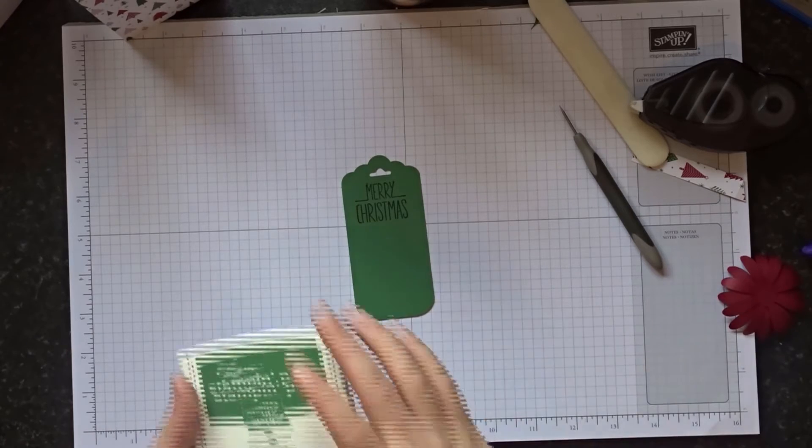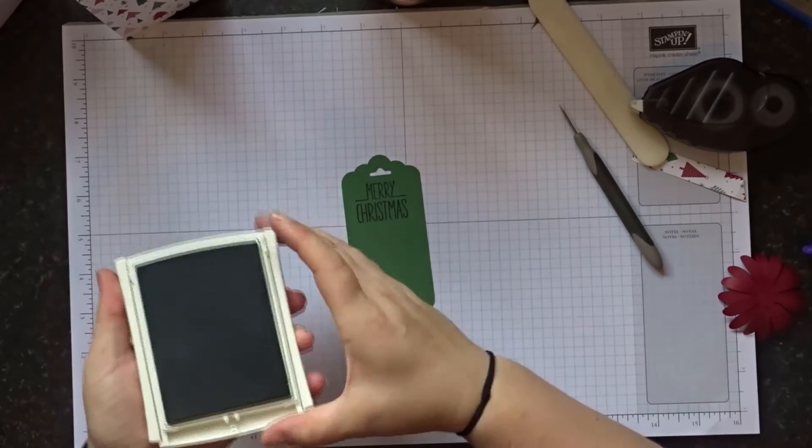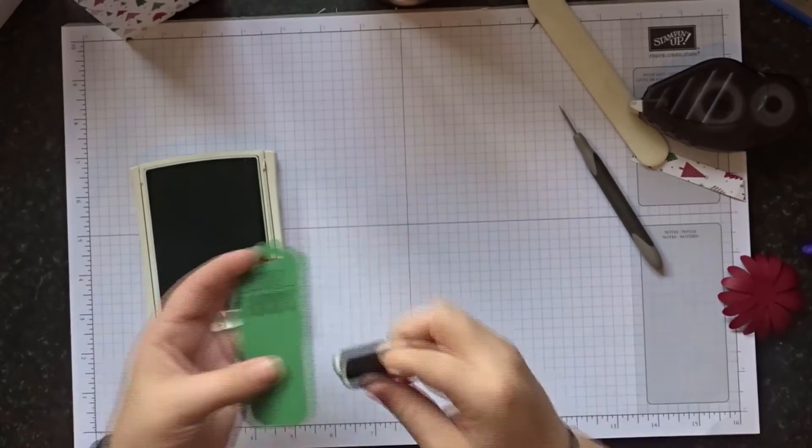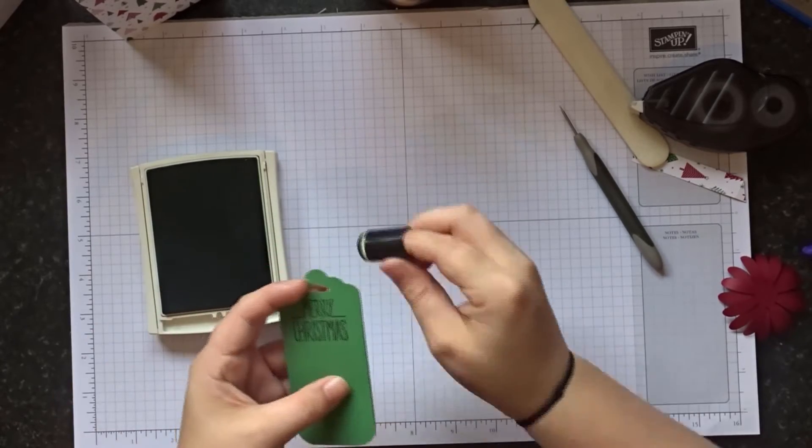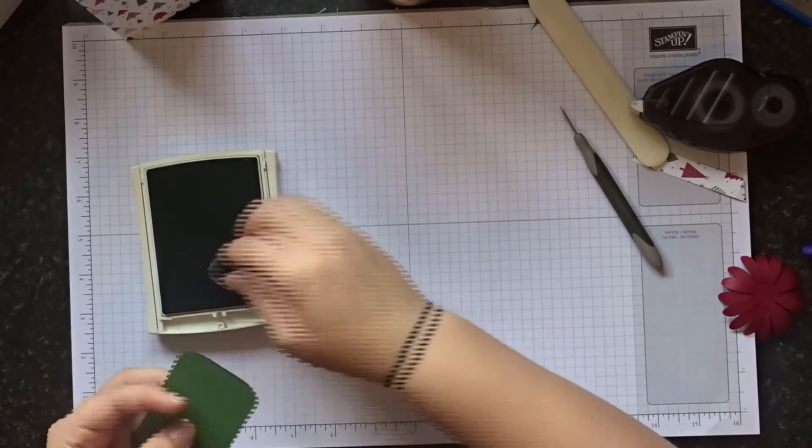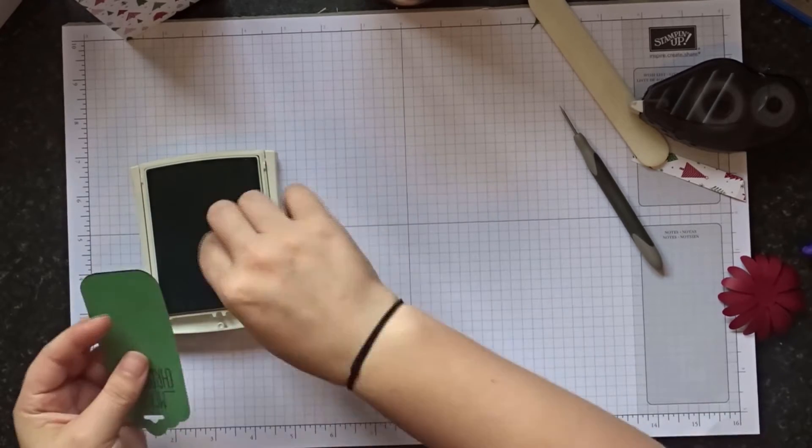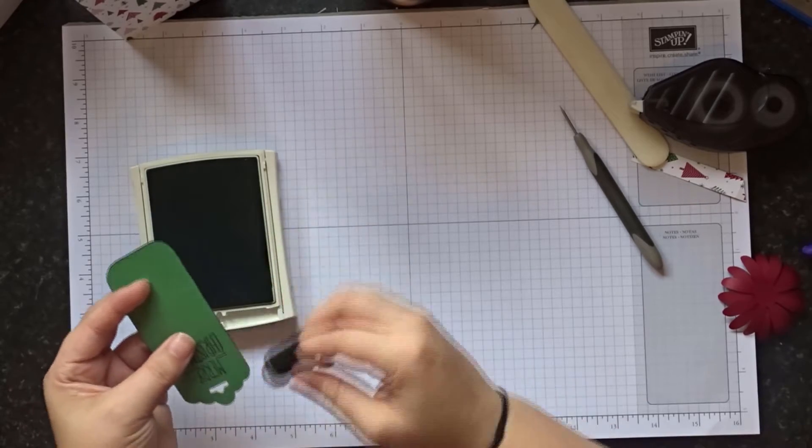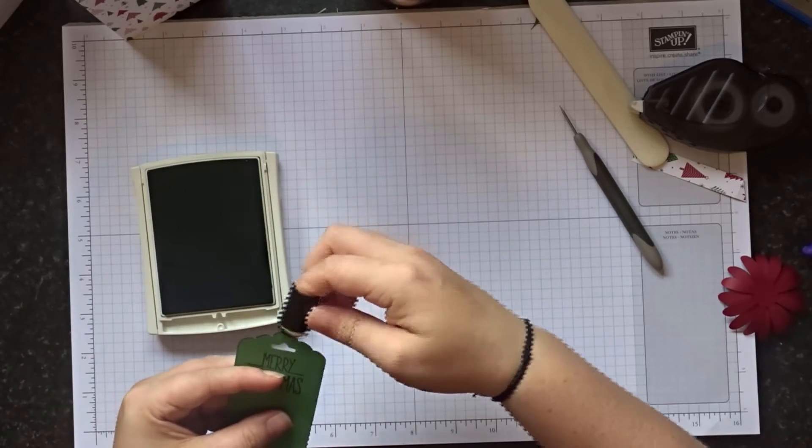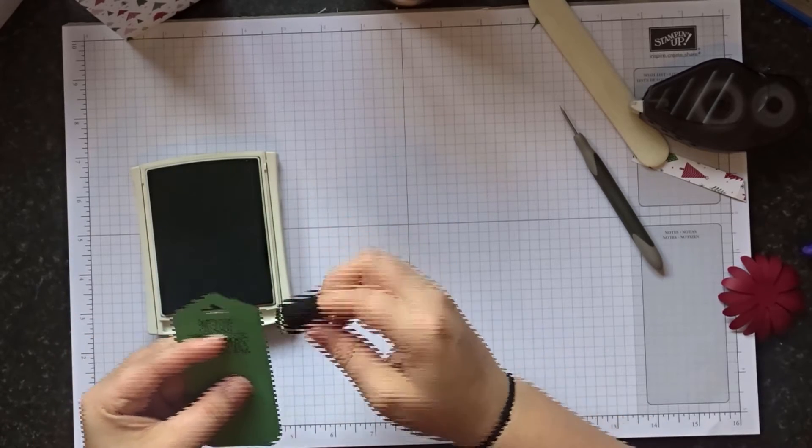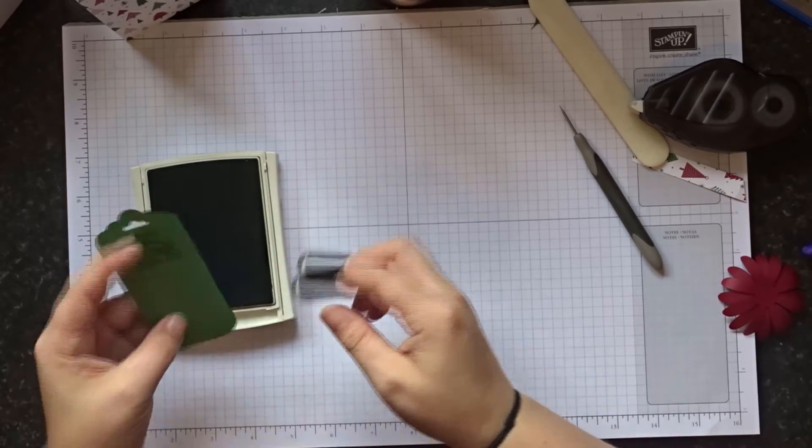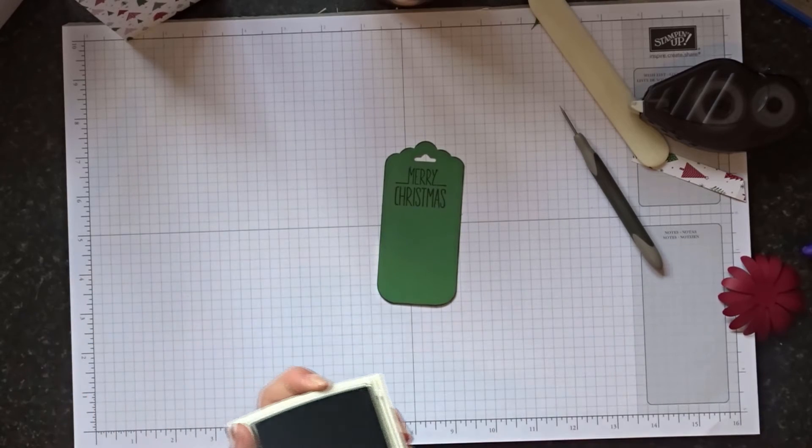So you're now going to grab your garden green ink and one of our dabbers. Ink it up and we're just going to go around the edge and just add a little bit of colour to the edge. Just a little bit. Hopefully you can see that it's just added a little bit of colour to it.